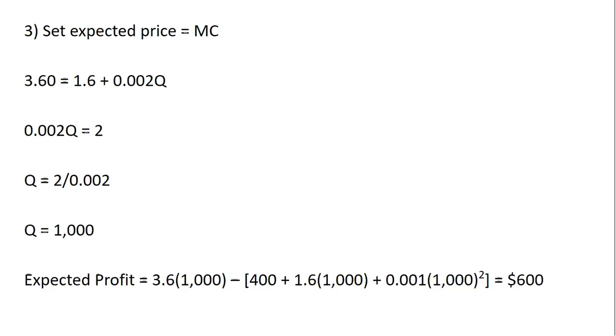So it's just total revenue minus total cost, where total revenue is 3.6 times 1,000, so the expected price times the output. And then we're just going to evaluate the cost function at 1,000 units of output. So this simplifies to an expected profit of $600.